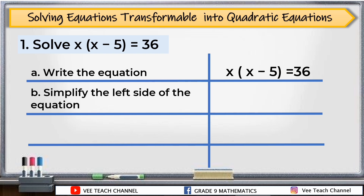We will apply the distributive property. We can simplify x and x here: x times x, and then x times negative 5. X times x is x squared, and x times negative 5 is negative 5x. Then copy equals to 36.